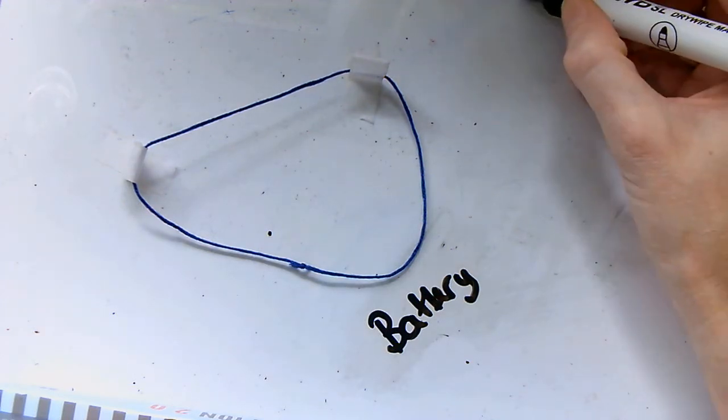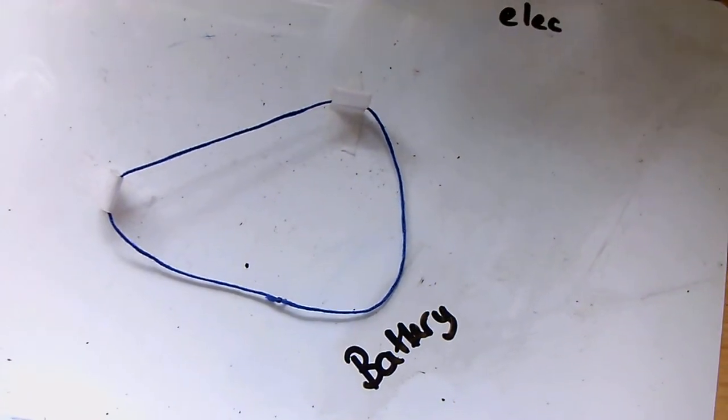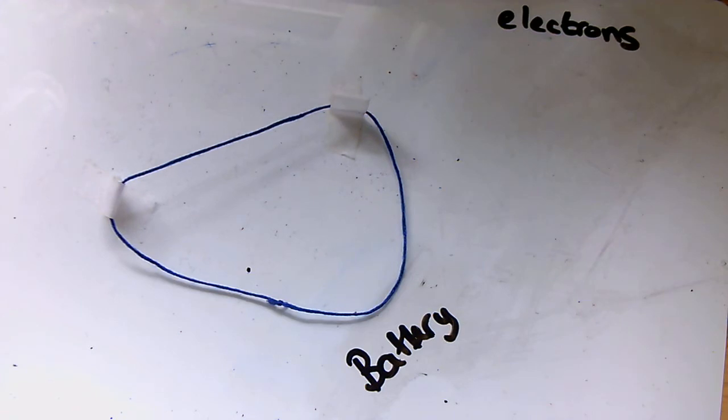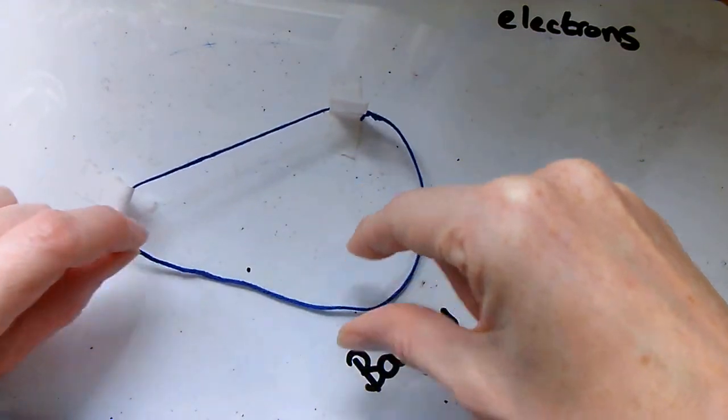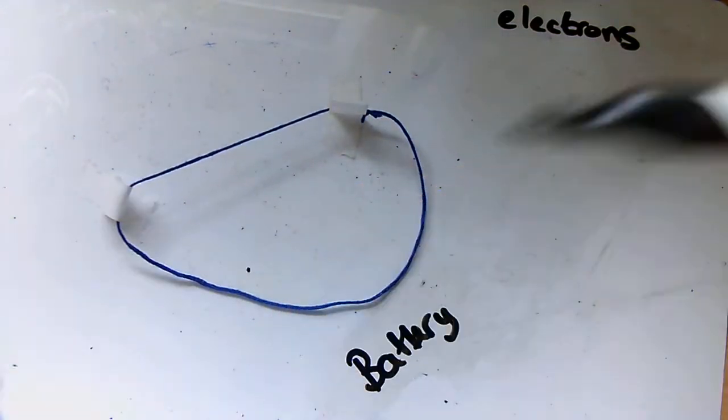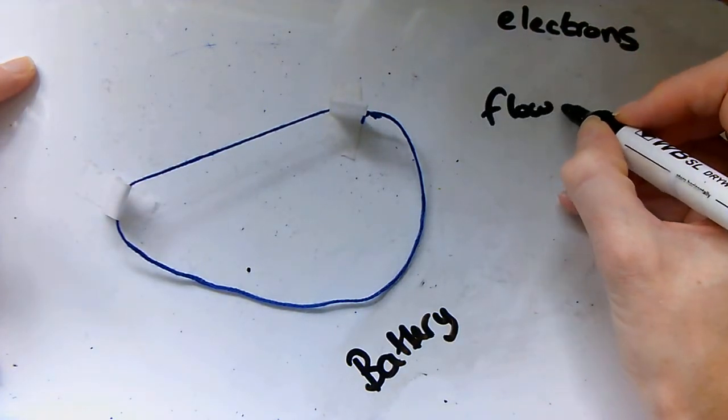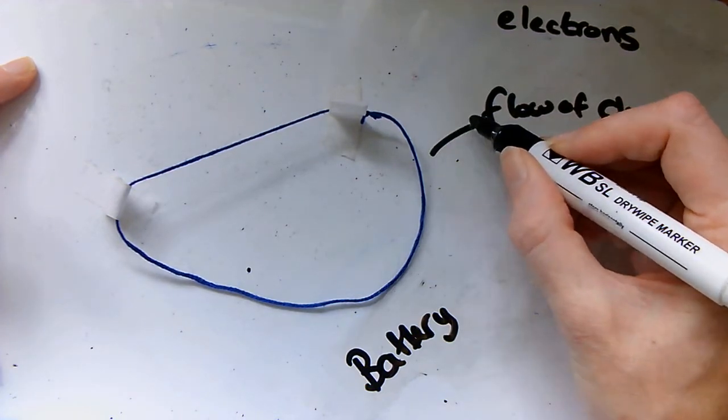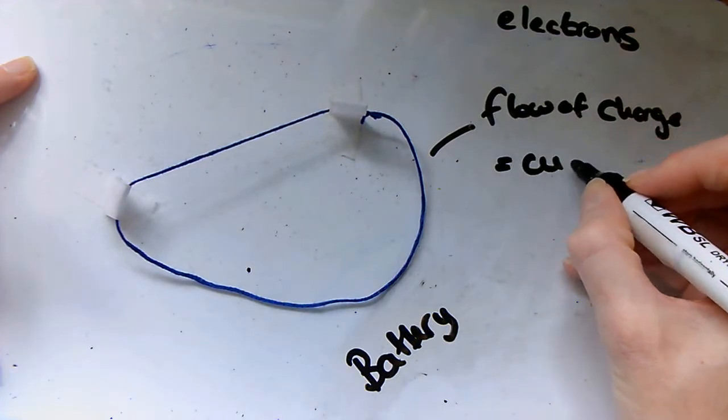The charged particles are called electrons, and they flow around the circuit. As they start to move, we say that they are flowing around. The flow of charge is represented by this little bit of string, or our rope, and we call the flow of charge current.